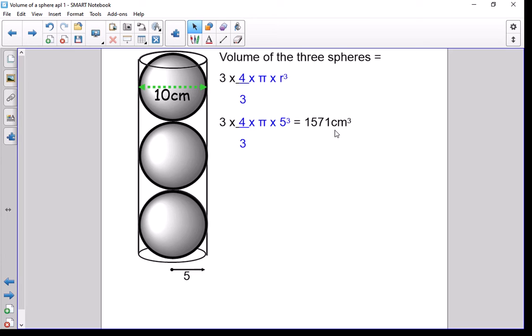The other thing they like to put in there is for you to find, for example, the volume of the cylinder. We know the volume of the cylinder is the base times the height.